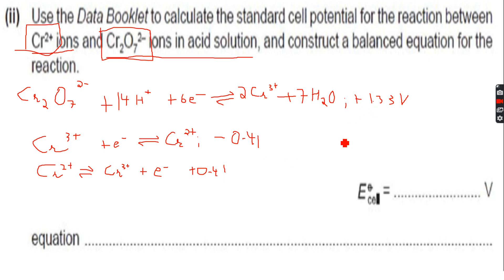So we are done with this. Now we'll have to multiply this equation by 6 because there are 6 electrons here but only one electron there. So we'll multiply this entire equation by 6 and the electrons get cancelled out.